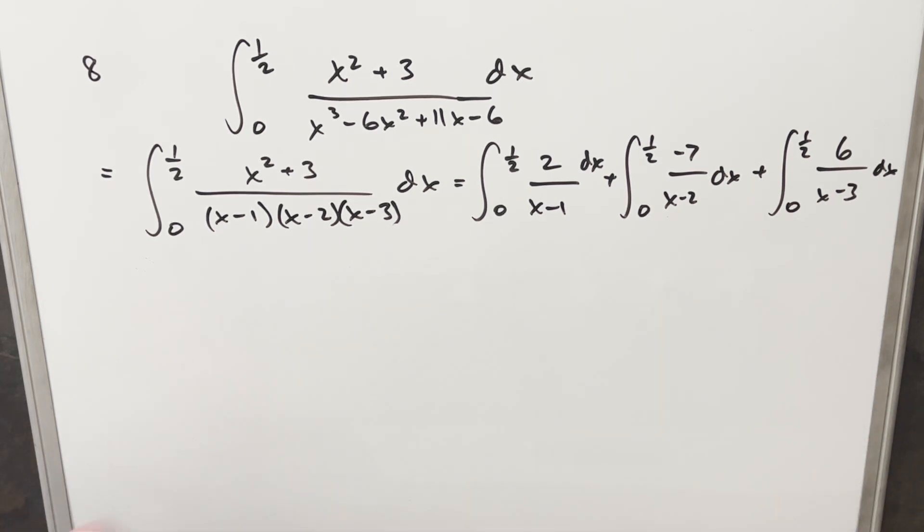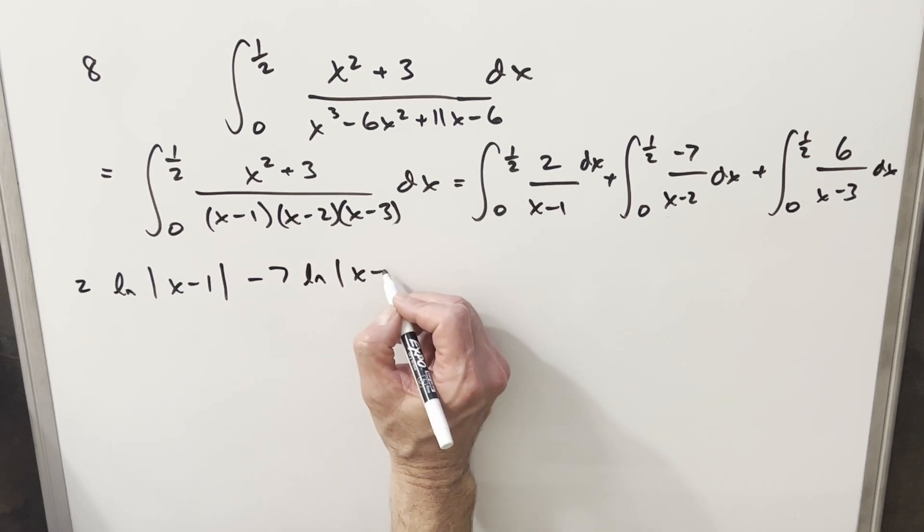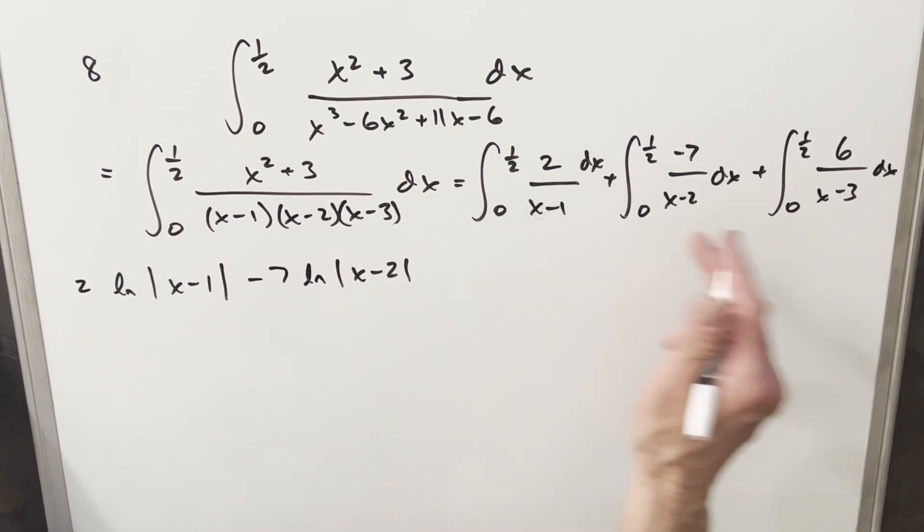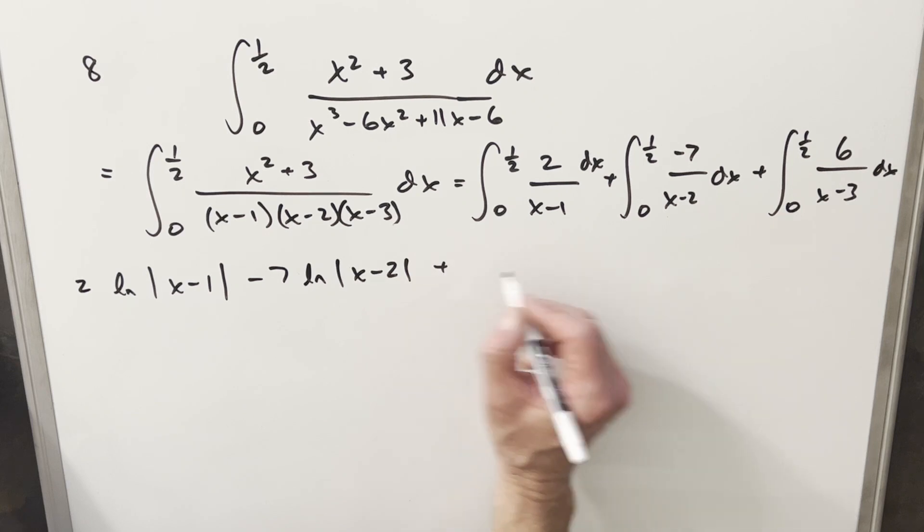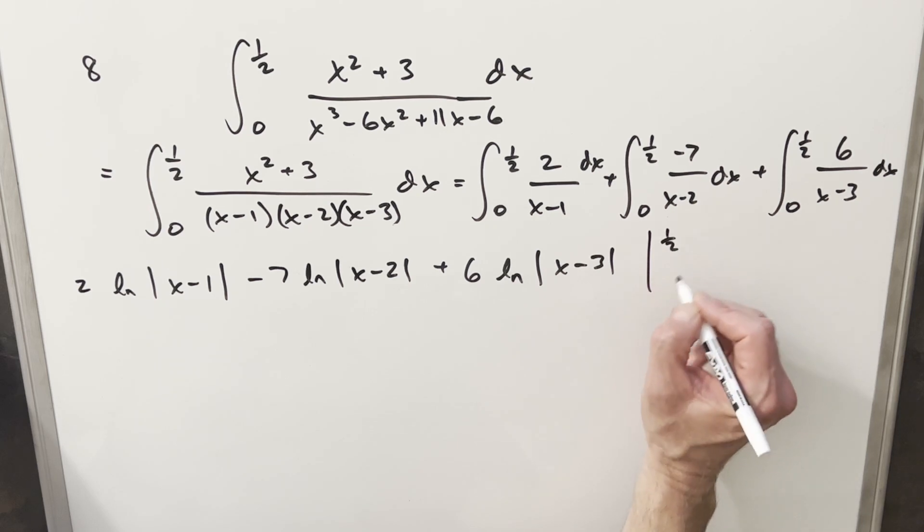So first, we're going to have, just bring the 2 out front. We can bring these constants outside of the integral. So this is going to be 2 ln|x - 1|. Then for the next one, we're going to have -7 ln|x - 2|. I'm going to evaluate them all at once because we've got the same bound. So then the last one is just going to be 6 ln|x - 3|, and we're evaluating all this from 0 to 1/2.